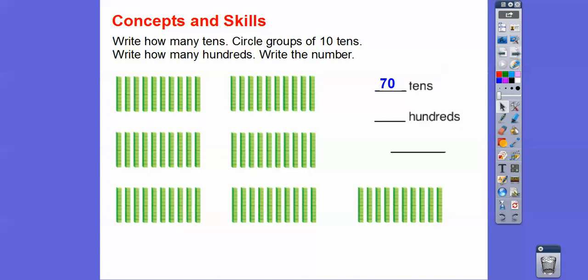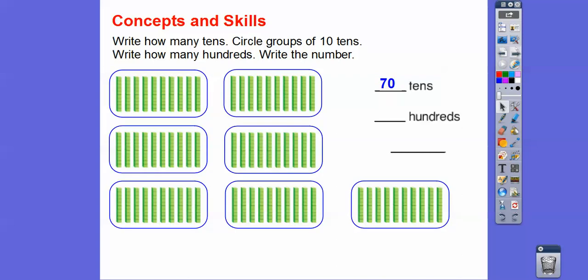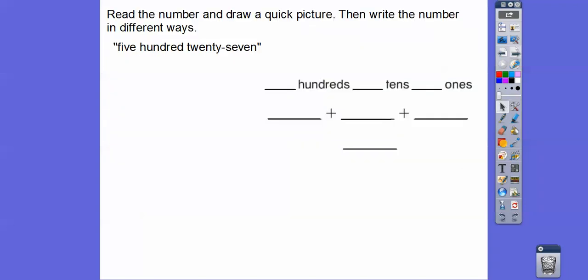And then it says circle groups of ten tens. Here's ten tens right here. Let's circle that. Here's ten tens. Let's circle all of these. Those are all our groups of ten tens. Remember, ten tens gives us 100. So since we have seven of these, then we have seven hundreds right there. And so that would represent 700.